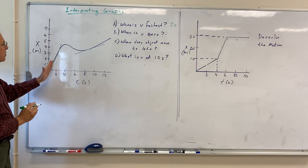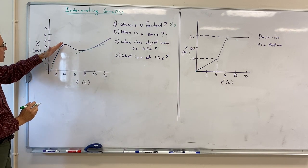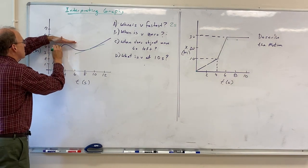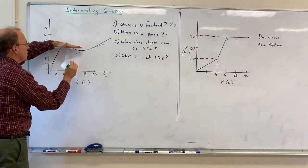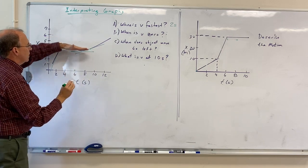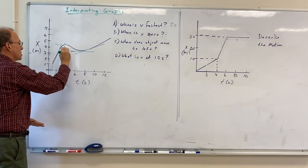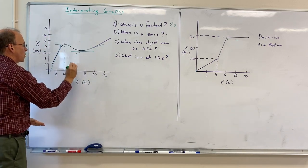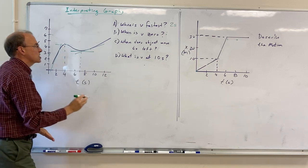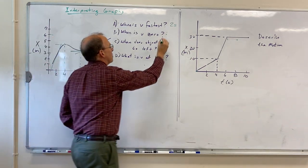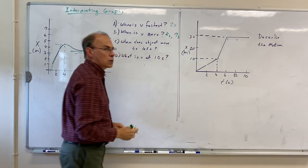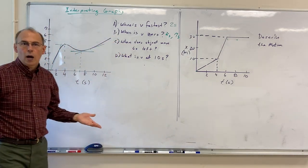When is V zero? Well, when the slope is horizontal — there and there — that means the velocity is zero. So here at say four seconds, and at around seven seconds, the velocity would be zero. So the particle stops twice.